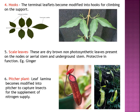The next modification is hooks. The example given in your book is Bignonia. In Bignonia, the terminal leaflets become modified into hooks for climbing onto support. In a compound leaf, the lateral leaflets are on the sides and the terminal leaflet is at the top. This terminal leaflet sometimes forms hook-like structures used for climbing or support. They appear like the claws of a cat, as written in your book.